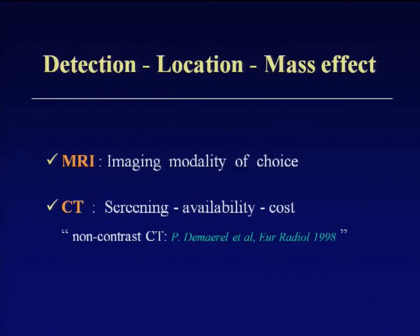Without any doubt, MRI is the imaging modality of choice to detect and characterize an intracranial tumor. But in routine clinical practice, in an emergency CT room, the initial diagnosis of an intracranial tumor is typically made on CT, with a patient presenting with an acute neurologic deficit or seizures. Many people propose that since the next step is MRI, we can skip contrast on CT, for reasons related to cost.